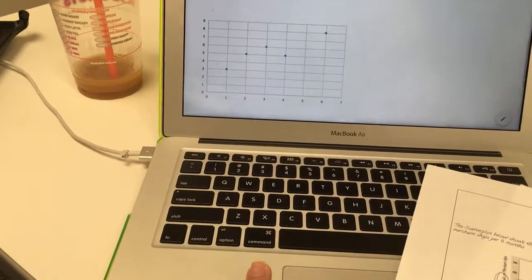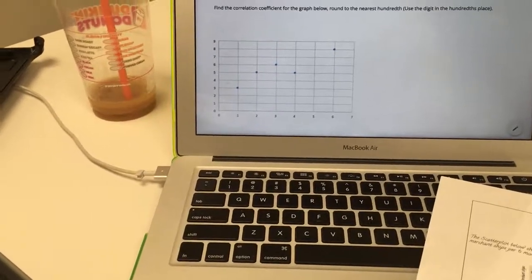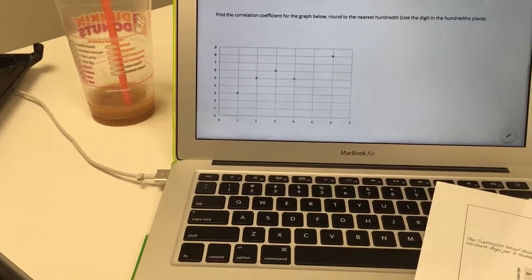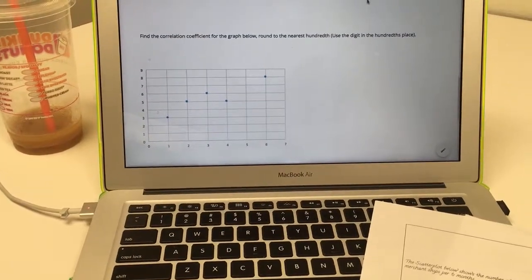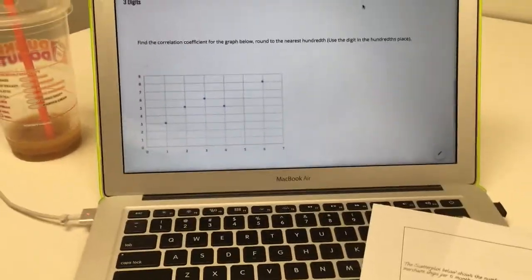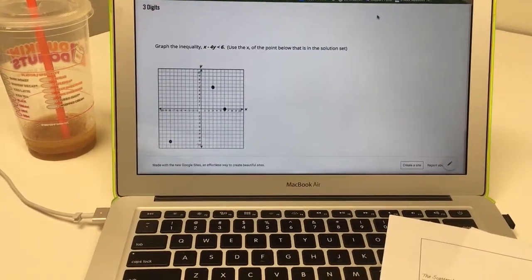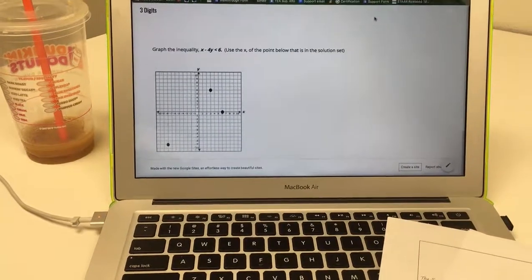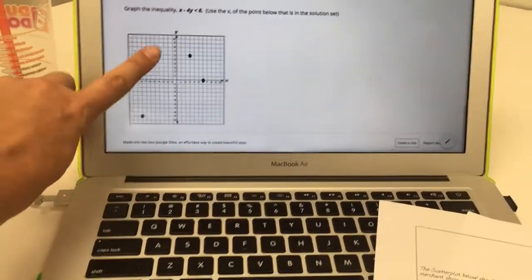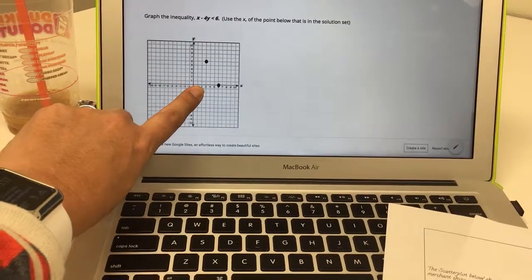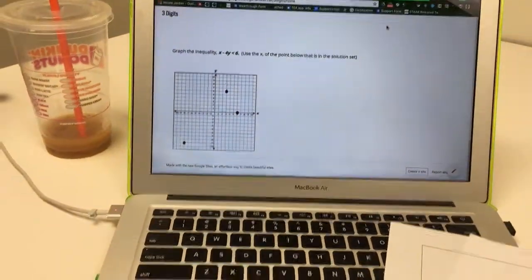Next it wants them to find the correlation coefficient. When they do that the answer is 0.90 and it wants them to use the digit in the hundredths place so that's 0. And then the last question wants them to graph the inequality and then use the X of the point that is in the solution set. This point right here is in the solution set. The X value is 3 so the three-digit code is 1 0 3 and it unlocks the small box.